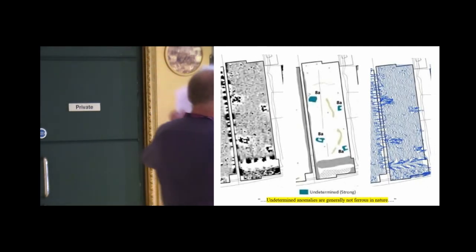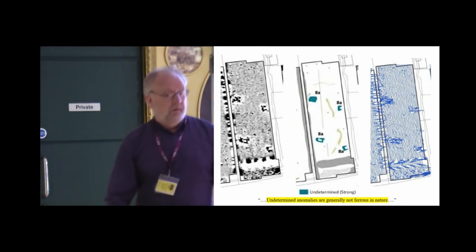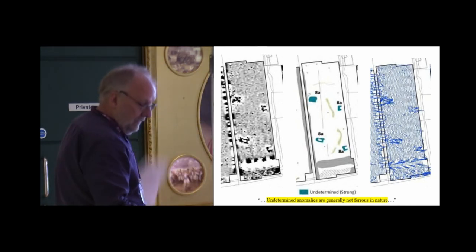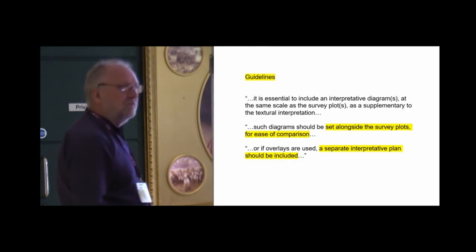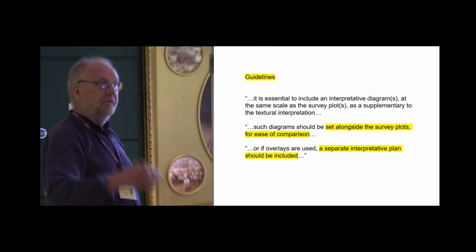Another data set, some nice XY plots, nice grayscale. Interpretation, undetermined. Well, you've got questionable. You look at the XYs, undetermined. What's an iron spike? Oh, undetermined anomalies are generally not ferrous in nature. I'm sorry, but this really frustrates me to see this repeated over and over again.